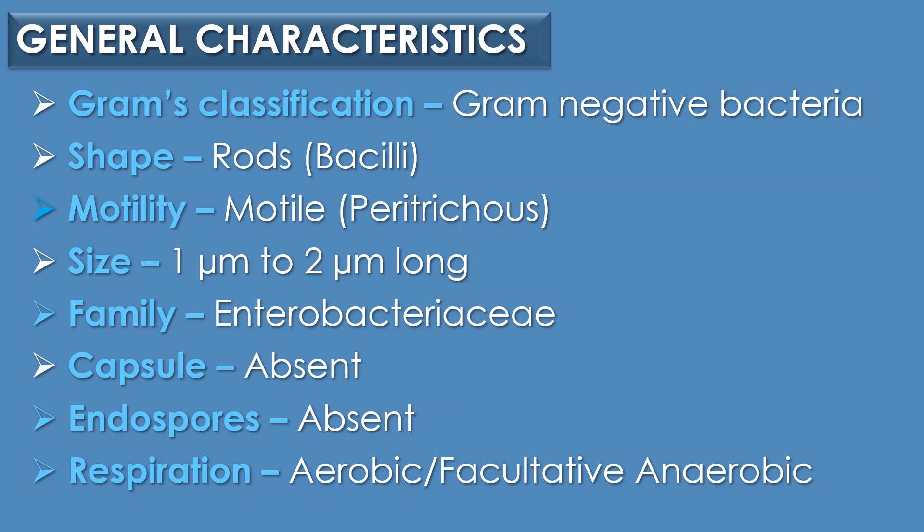First, general characteristics of E. coli. E. coli is a gram-negative bacteria and it is a rod-shaped bacteria. It is motile in nature due to its peritrichous flagella, and the size of E. coli is ranging from 1 µm to 2 µm long and it belongs to the family Enterobacteriaceae. Capsules are absent, endospores are also absent.